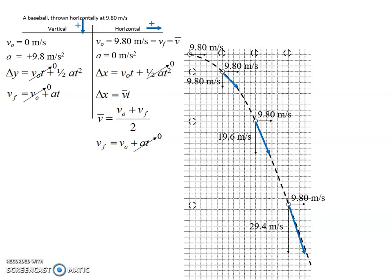Let's break out the calculators and do some calculations for the one-second mark. We have vertical and horizontal components, so we just do Pythagorean theorem using three significant figures. It is velocity, so we want the angle as well. For projectiles viewed from the side, the angle is always measured with respect to the horizontal. You can pause the video and try the calculation. The answer is 13.9 meters per second — and since both sides of the triangle are equal, it's an isosceles triangle, so the angle is 45 degrees.